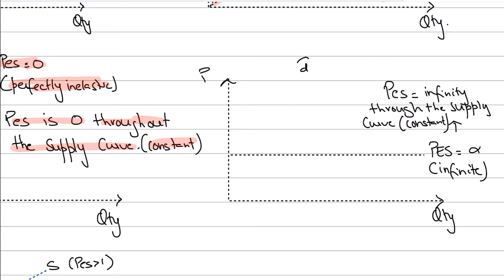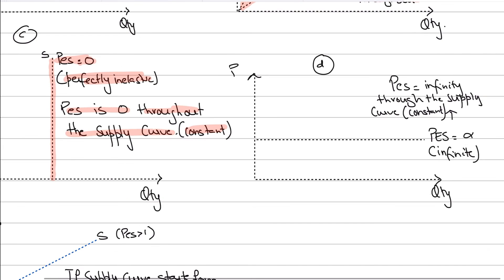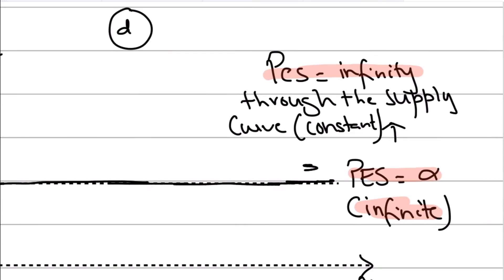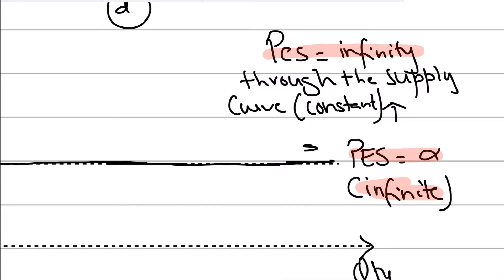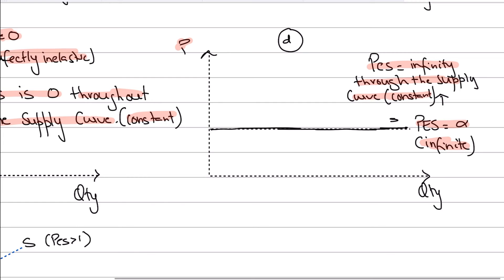Diagram D shows that whenever your supply curve starts from the vertical axis and is a horizontal straight line, it indicates PES equals infinity — perfectly elastic. The curve is drawn as a horizontal straight line starting from the price axis (vertical axis). For this supply curve as well, the elasticity is constant throughout — it will not change as you move along the curve.